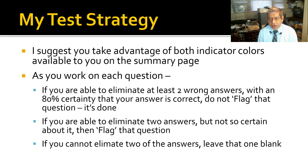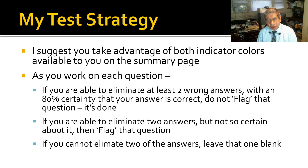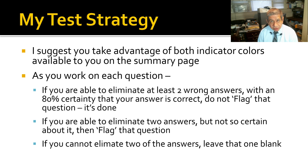This is my test strategy. Take advantage of both indicator colors on the summary page — very important. As you work on each question during the initial pass-through: if you can eliminate at least two wrong answers with 80% certainty that your remaining answer is correct, do not flag that question — move on. If you can eliminate two answers but aren't sure which of the remaining two you picked, flag it and it'll appear yellow. However, if you cannot eliminate two answers, leave it blank and deal with it later if you have time.